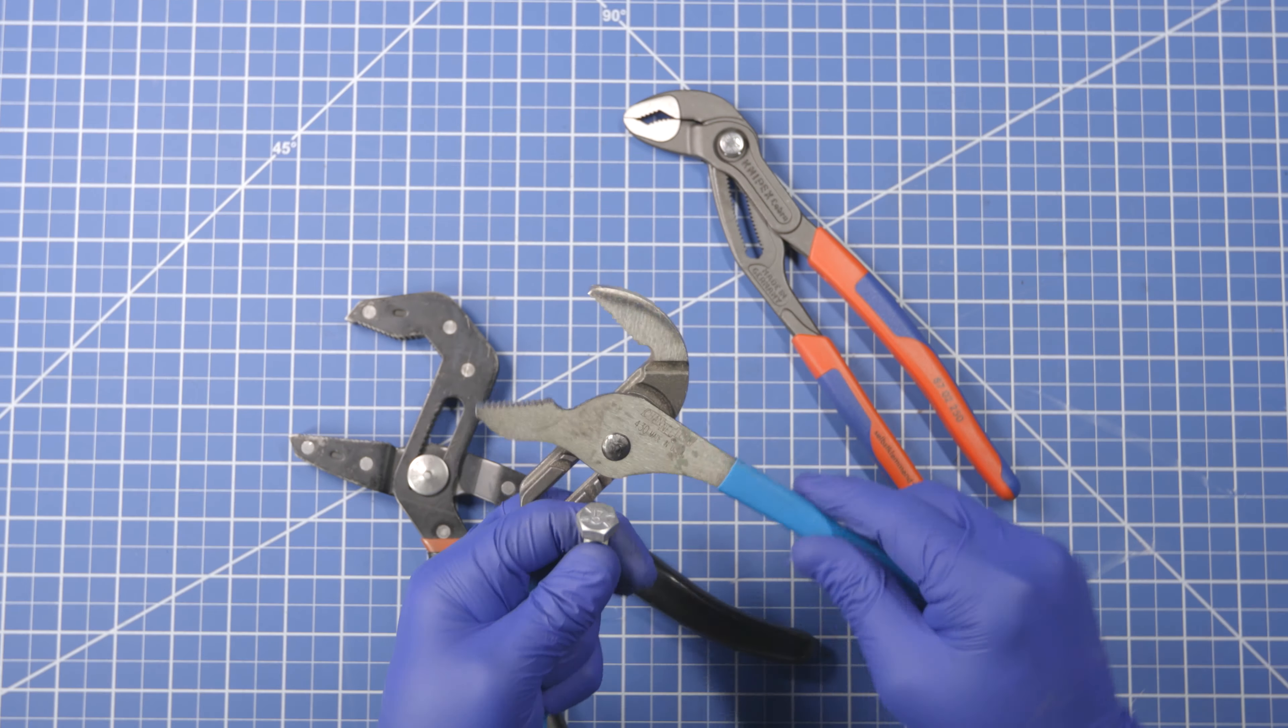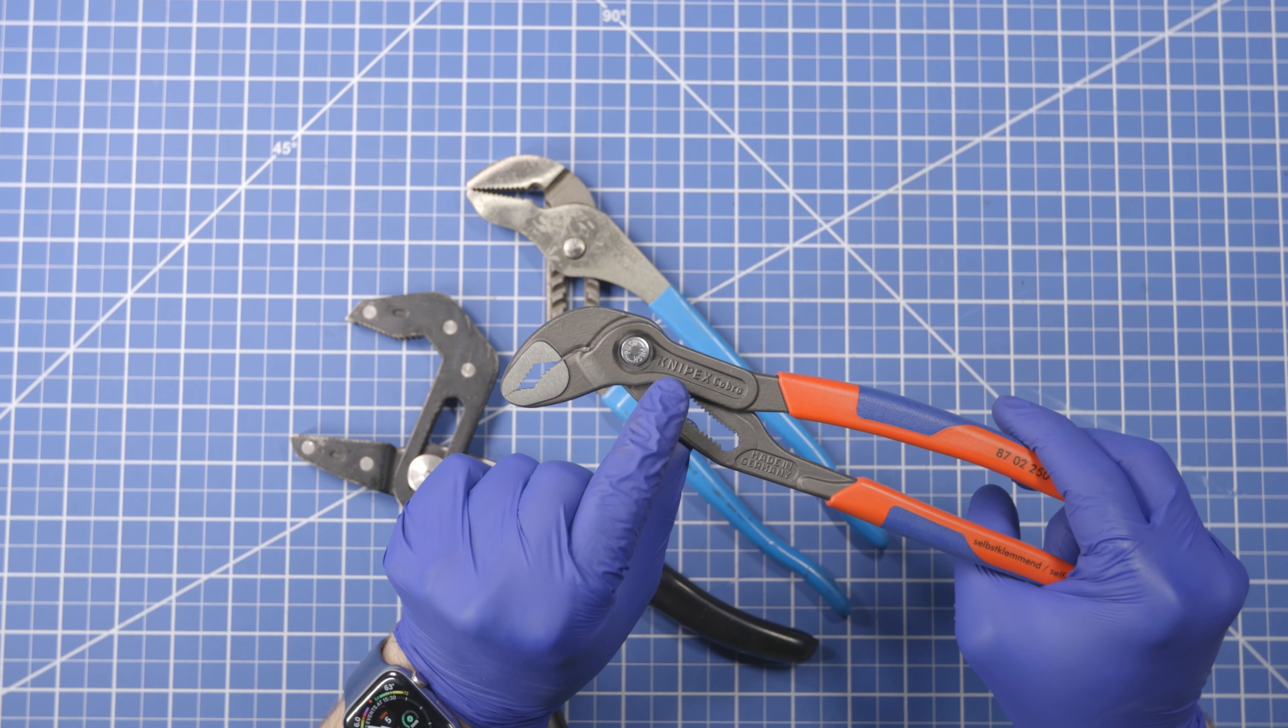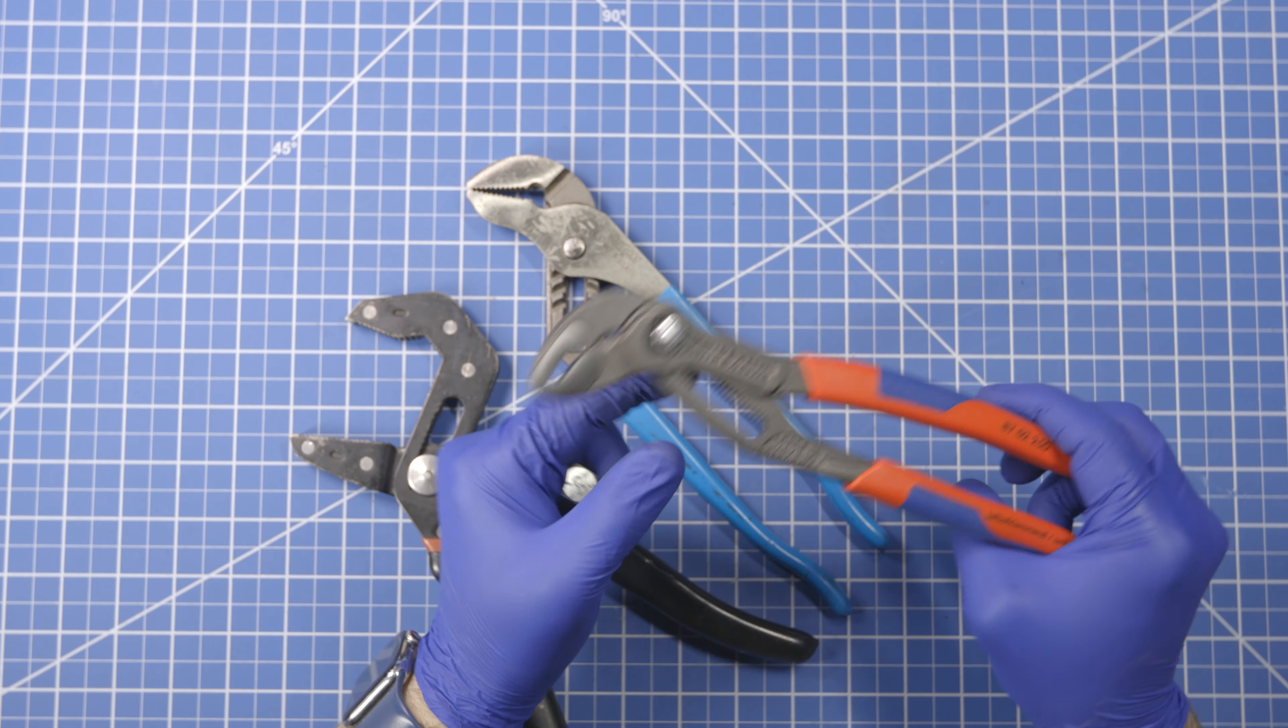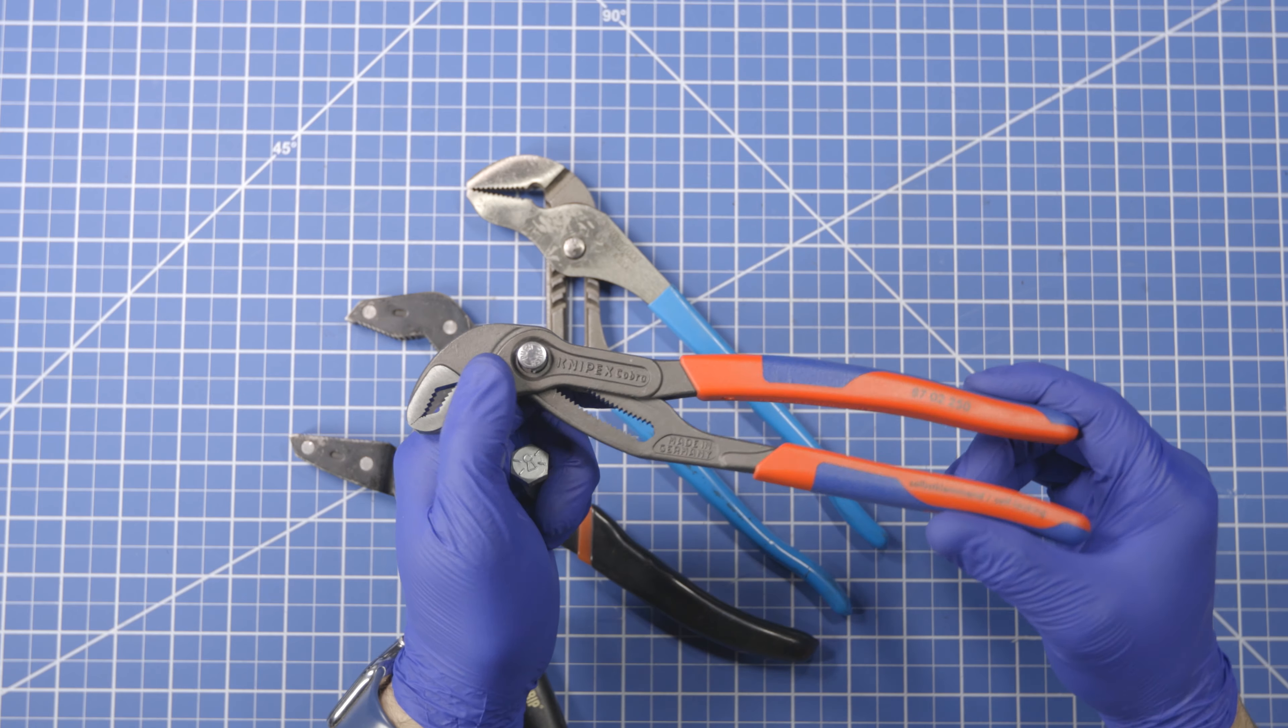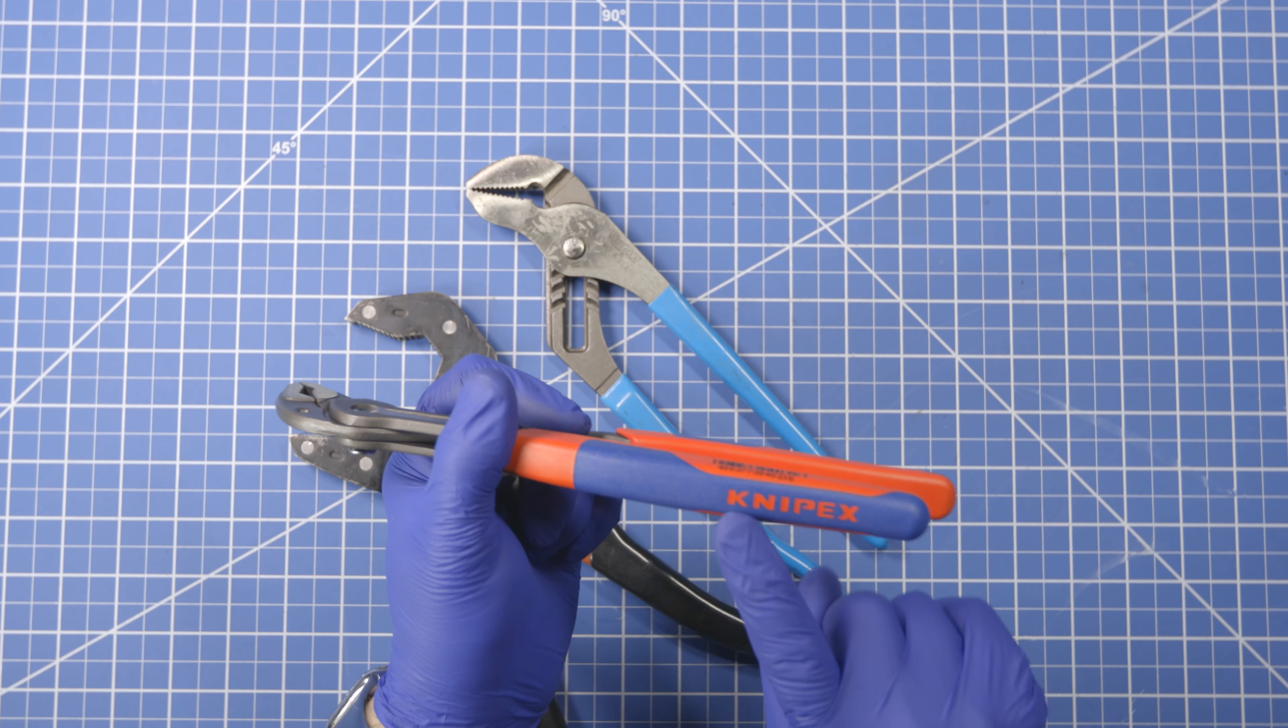So these are the Knipex Cobra pliers. Now the way you pronounce that word is Knipex, not Nipex. You can watch the various from Germany videos about their tools and they say Knipex pretty consistently. Knipex.